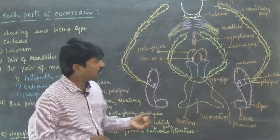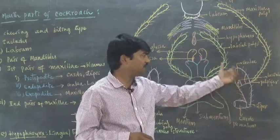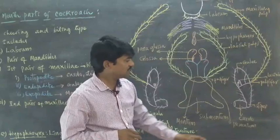First pair of maxillae are biramous structures which are divided into three specific structures. The anterior part is known as protopodite,